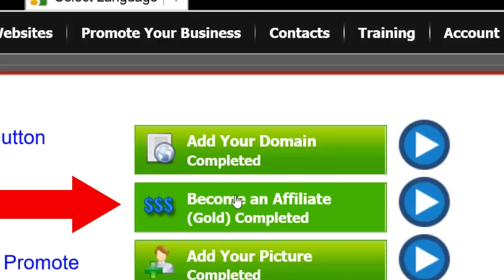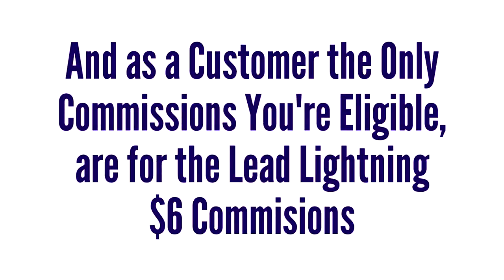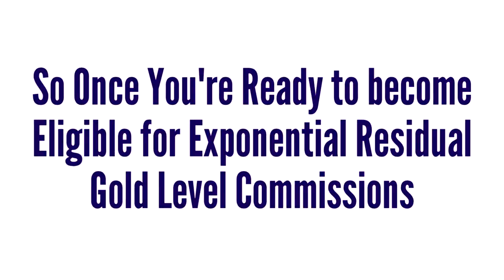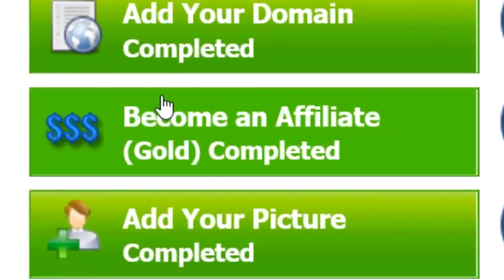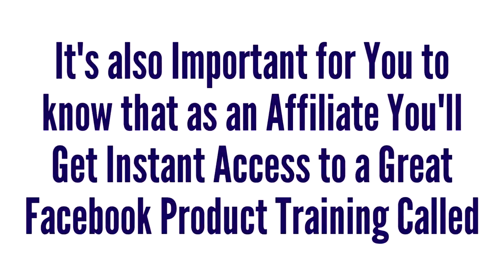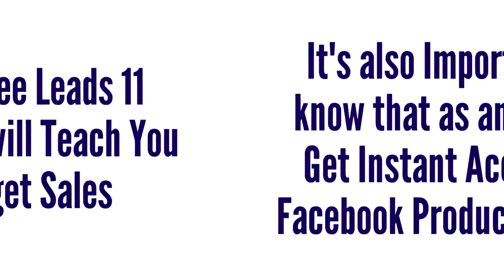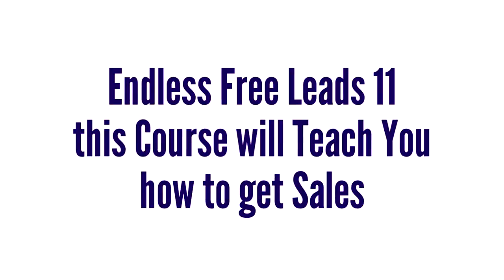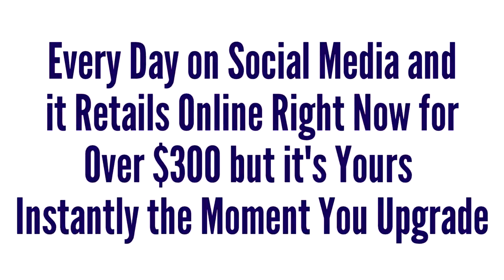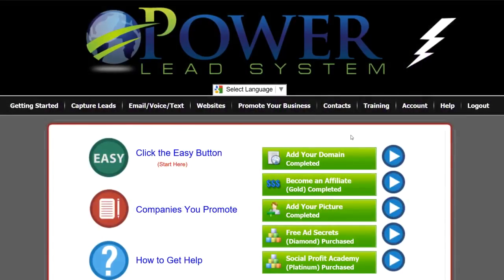The next button on the Getting Started tab is called Become an Affiliate. If this button is green, that means you're already an affiliate, also known as a gold member. If the button is red, that means you're a customer only — and as a customer, the only commissions you're eligible for are the Lead Lightning $6 commissions. Once you're ready to become eligible for exponential residual gold-level commissions, click this button and follow the steps to upgrade. As an affiliate, you'll get instant access to a great Facebook product training called Endless Free Leads 11. This course teaches you how to get sales every day on social media and retails online for over $300, but it's yours instantly the moment you upgrade.